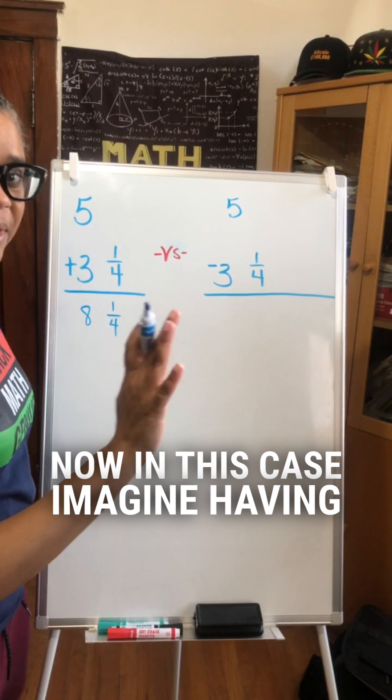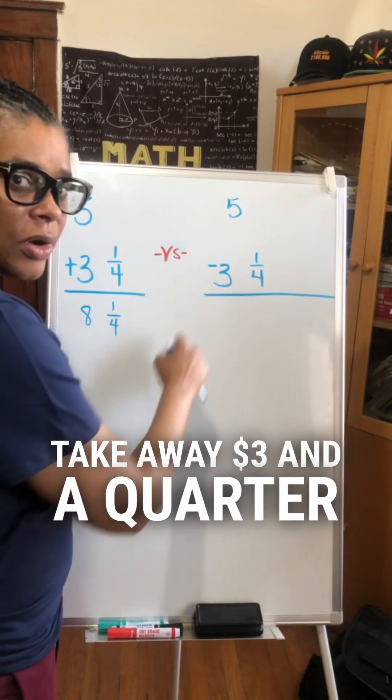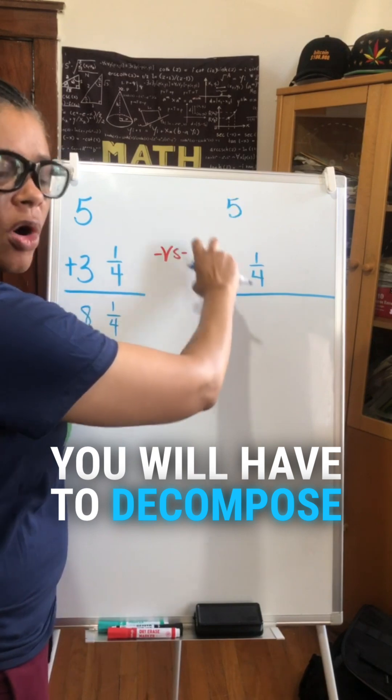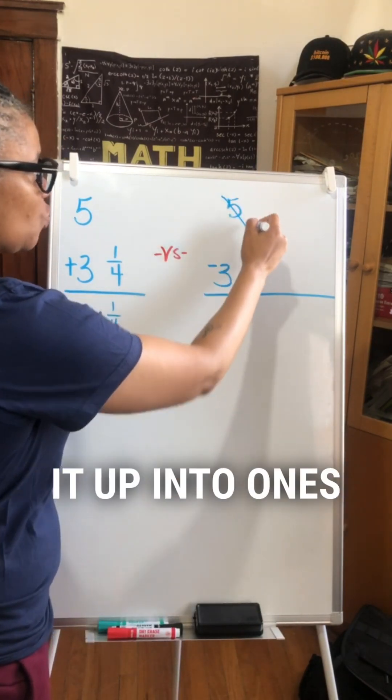Now in this case imagine having a $5 bill and you need to take away $3 and a quarter. You will have to decompose that $5. Break it up. So let's break it up into ones.